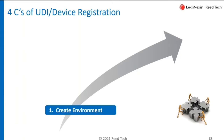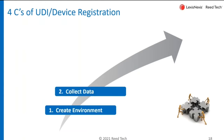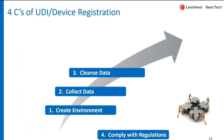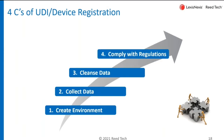Let's talk about the various steps that need to be followed in applying with device registration requirements. We're going to walk through the four C's as we refer to them here. The first one being Create an environment, the second one being Collect the data, the third being Cleanse the data, and the last one is Comply with all those regulations.